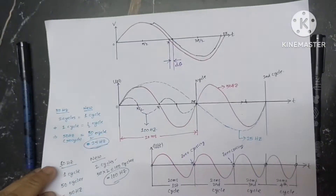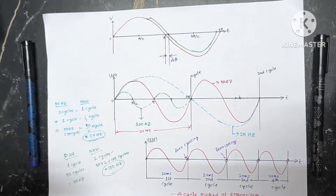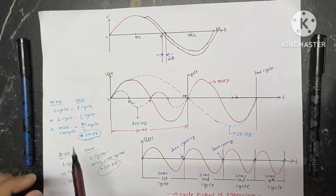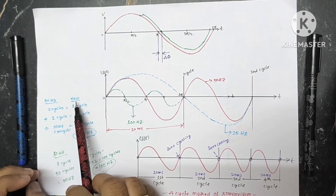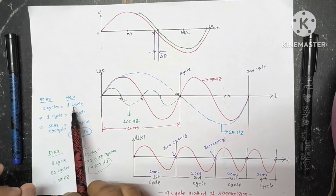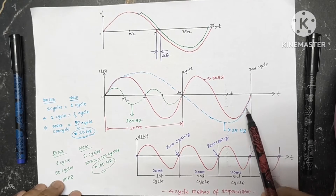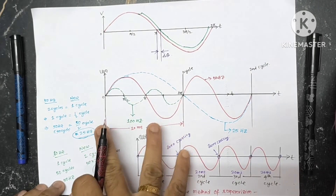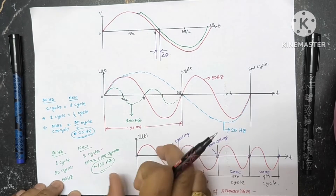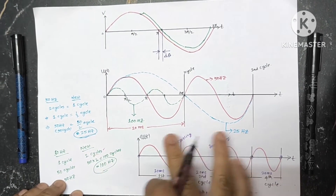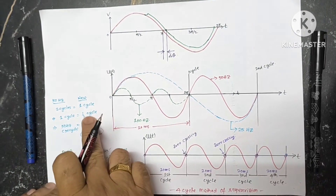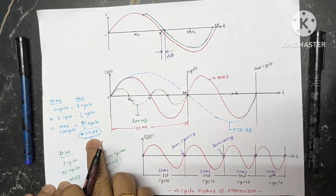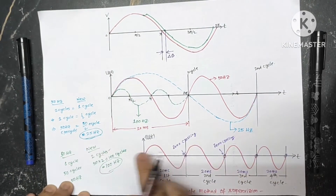For example, instead of 20 milliseconds, if I take 40 milliseconds to complete one cycle, what will be the frequency? The original frequency is 50 Hz shown in red, and the new frequency is shown in blue. Since it takes 40 milliseconds to complete one cycle, and two cycles of the new frequency equal one cycle of the original, that means one cycle of the new frequency equals half a cycle of 50 Hz — so the new frequency becomes 25 Hz.